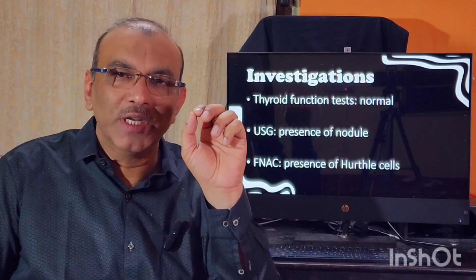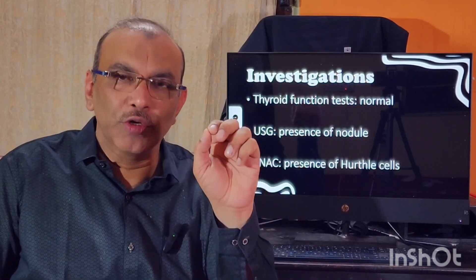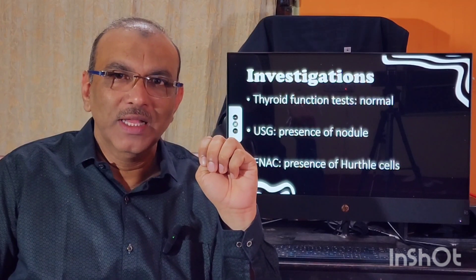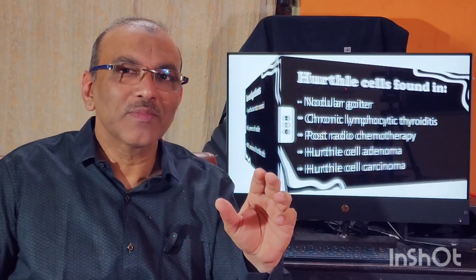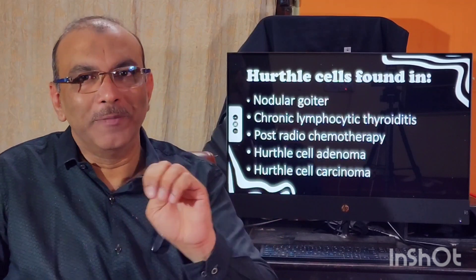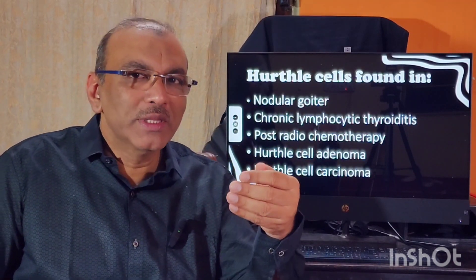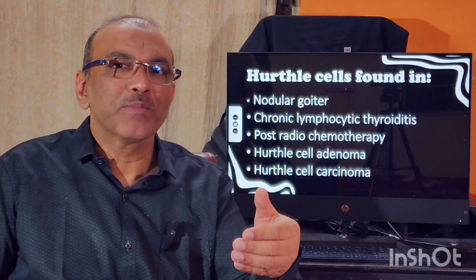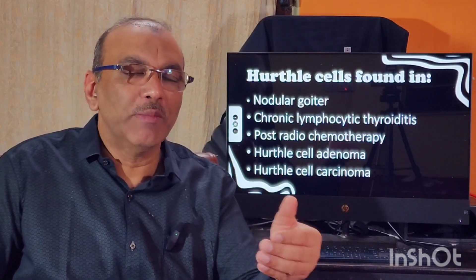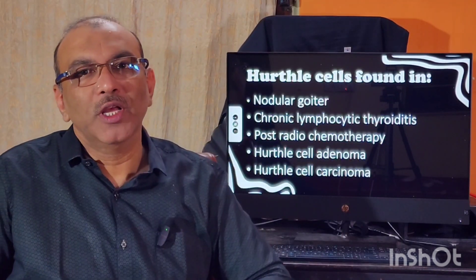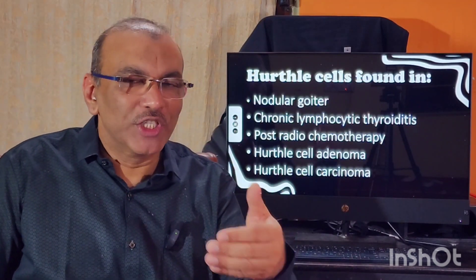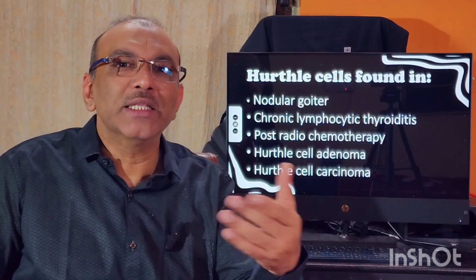In approximately 40 to 50% of cases, ultrasonography can suggest whether the nodule is benign or malignant. We then perform fine needle aspiration — a small needle is inserted into the nodule, the aspirate is sent for cytological examination, and it will be reported as Hurthle cell adenoma. However, with this cell study alone it is not possible to differentiate between adenoma and carcinoma.